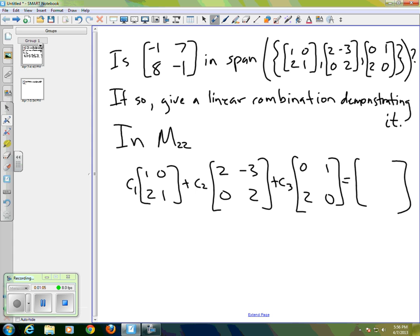such that that sum, that linear combination, equals [-1, 7; 8, -1].